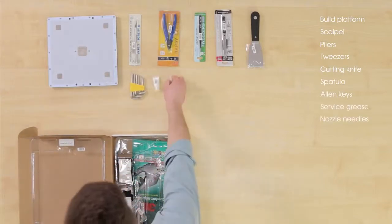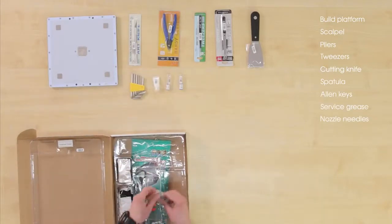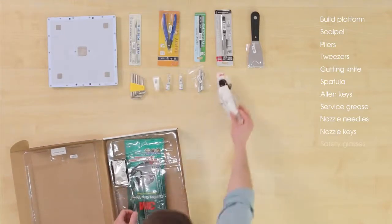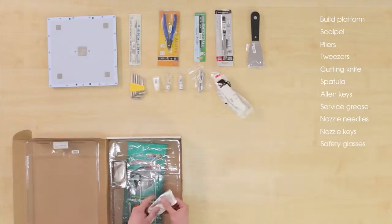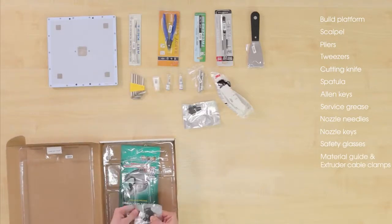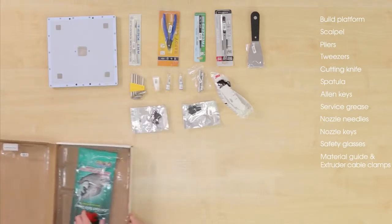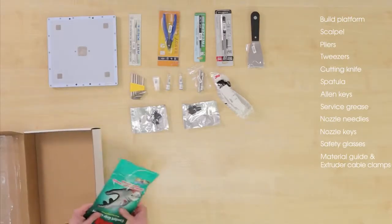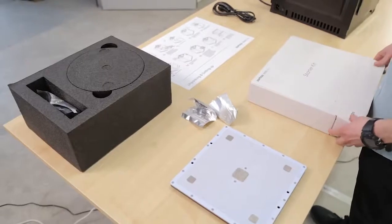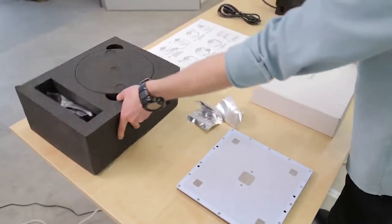Service grease, nozzle needles, nozzle key, safety glasses, material guide and extruder cable clamps, and safety gloves. For now, leave the clamps on the table. You will need them in the setting up process.